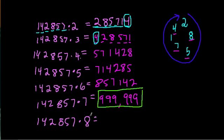Well, let's keep going. Let's not give up. Let's see what happens when we multiply by 8. When we multiply this number by 8, we get 1,142,856. Well, here, we don't have the same digits because now we have a 6.